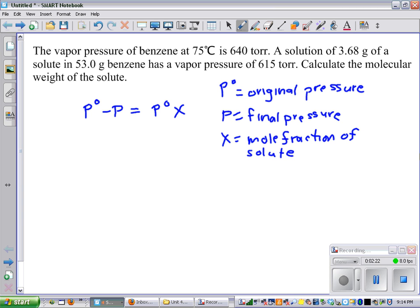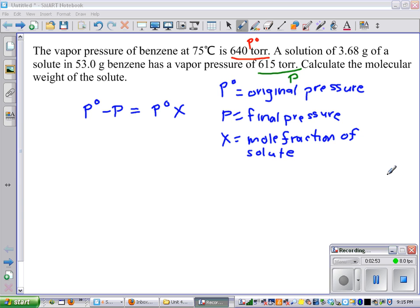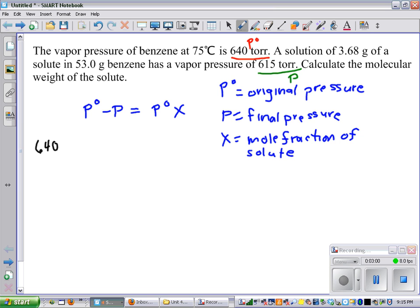So from the problem, we know that 640 is P°, 615 is P, and now we have to do a little bit of algebra.